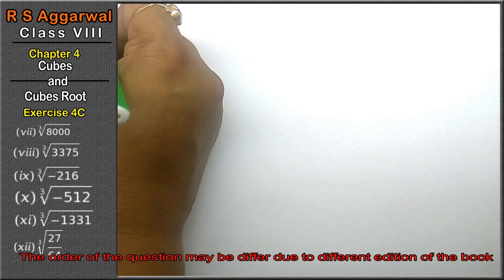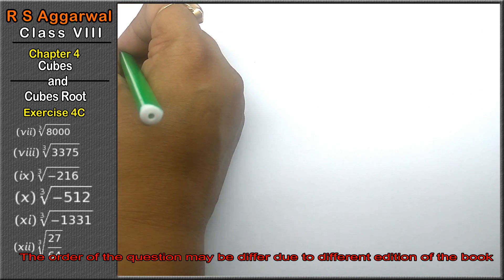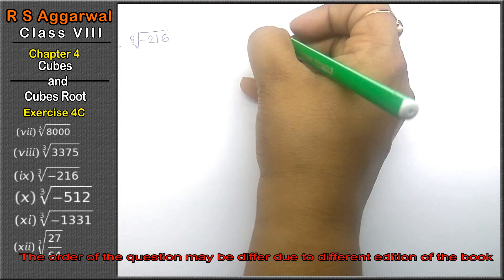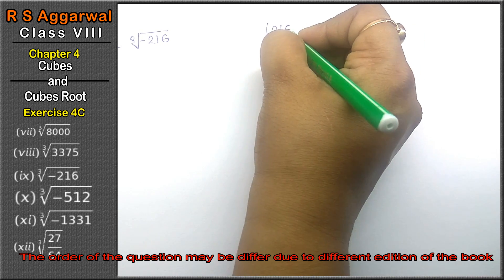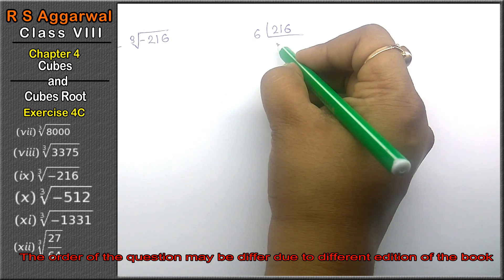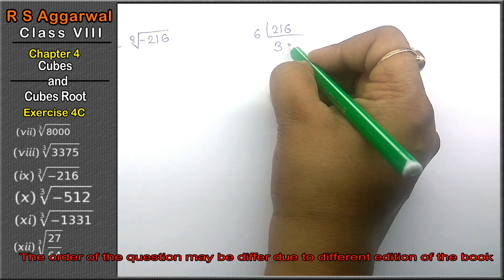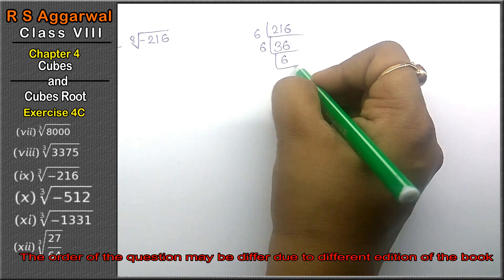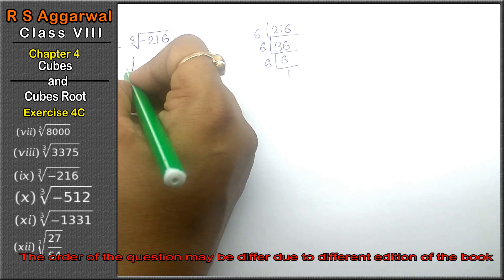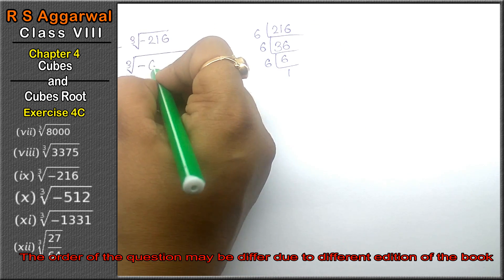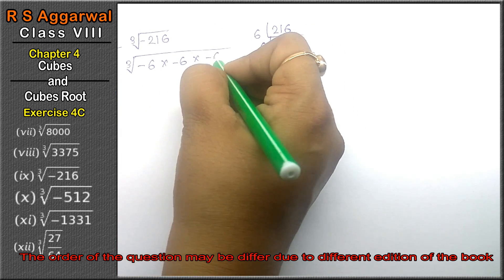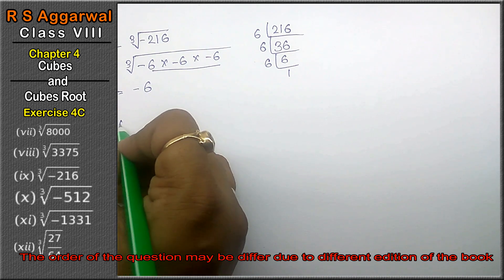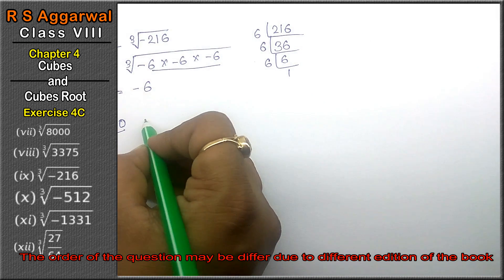Let's do question number 9 of Exercise 4C. Question number 9 is cube root of minus 216. We do the prime factorization of 216. We know 6³ = 216, since 6×6=36 and 6×36=216. So 216 = 6×6×6. Writing in the cube root: (−6)×(−6)×(−6). Making pairs of 3 and taking one out, the answer is −6.